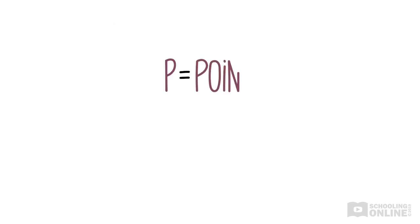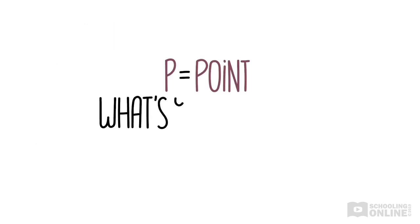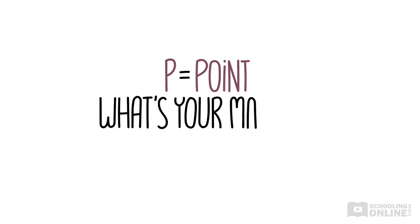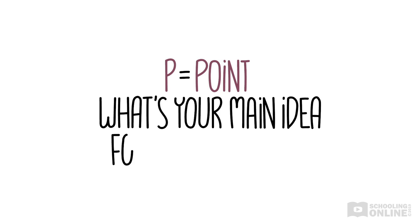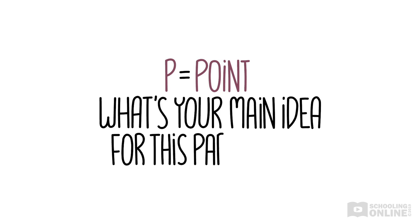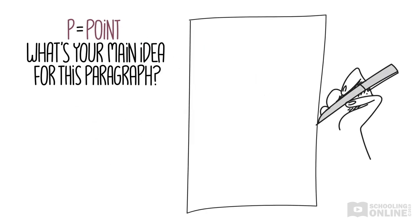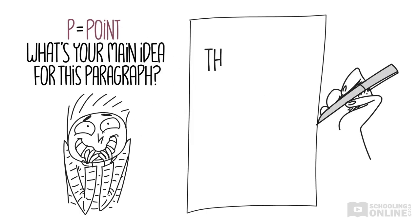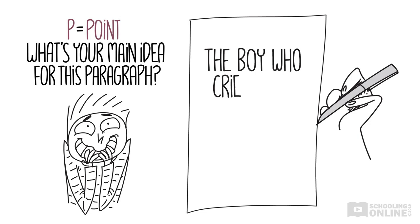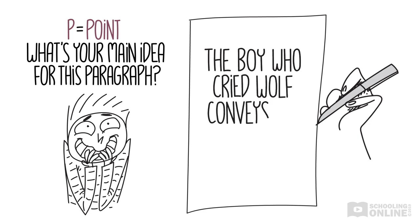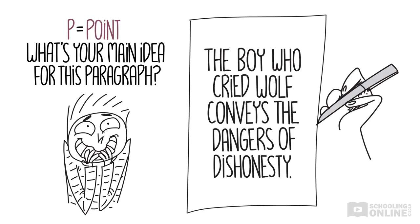P stands for point. What is the main point that you want to explain in your paragraph? For example, you might write that The Boy Who Cried Wolf conveys the dangers of dishonesty. You've just summarised a big message from the story.